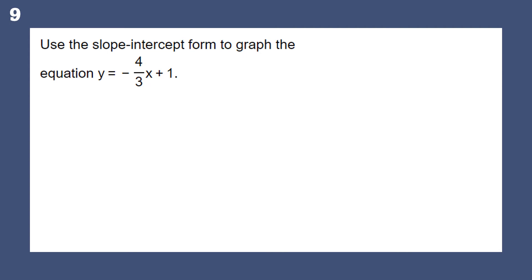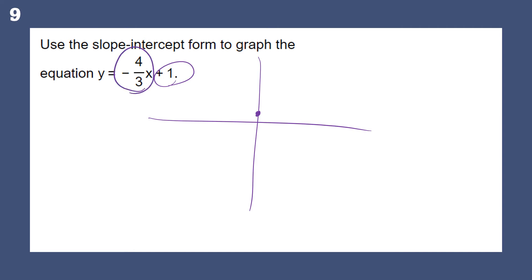Use slope-intercept form to graph the equation. We've got it in slope-intercept form already. We have the y-intercept, so I go to 1 on the y-axis and put a point — that's where it crosses. Then I move according to my slope: go down four — 1, 2, 3, 4 — and over three — 1, 2, 3. That gives me a second point. I moved from my y-intercept, not from the middle.